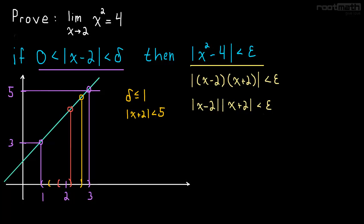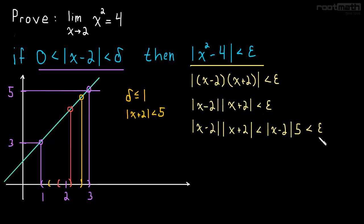So what's our next step? We just figured out that as long as delta is less than or equal to one, the absolute value of x minus two times the absolute value of x plus two is less than the absolute value of x minus two times five, because we said x plus two is less than five. And we still want this to be less than epsilon. So what we find out is x minus two is less than epsilon over five. We have x minus two is less than delta, so if we choose delta to be equal to epsilon over five, things are going to work out nicely.